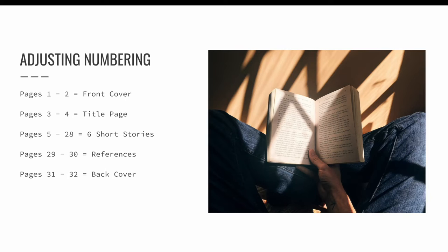In this next example, I am making a 32-page self-cover booklet of short stories for an English class. It is my intention to break the booklet into the following sections: pages one and two will be the front cover and a blank page on the inside of the front cover; pages three and four will be the title page and the blank page beyond it; pages five through 28 will be six short stories, with a new section for each story and each story exactly four pages long; pages 29 and 30 will be a student acknowledgements and references section; and pages 31 through 32 will be the back cover and the blank page on the inside of the back cover. I've mapped out my plan, and now I can go about creating these sections within my InDesign document.